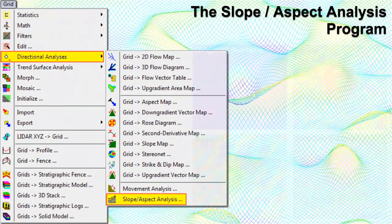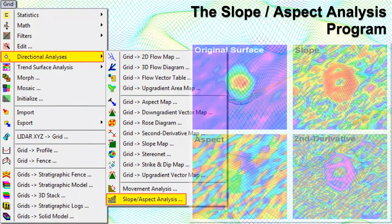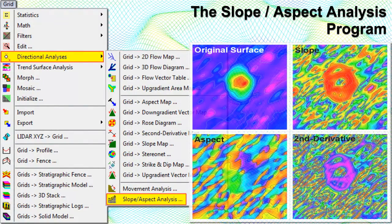The Slope Aspect program is used to compute the changes in Z values — such as elevations or concentrations — between neighboring nodes in an existing grid file, and store these in up to three new grid files: a slope grid containing the change or slope between node Z values expressed in degrees, percent, or radians; an aspect grid containing the direction of the slope expressed in azimuth degrees; and a second derivative grid containing the change in slope — the slope of the slope grid — to illustrate bends.